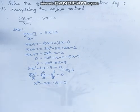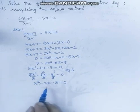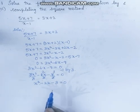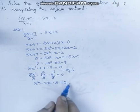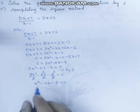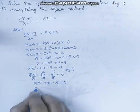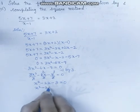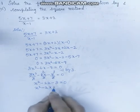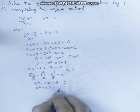Now we apply the completing the square method. First, we move the constant term to the right-hand side. So, x square minus 2x is equal to 3.